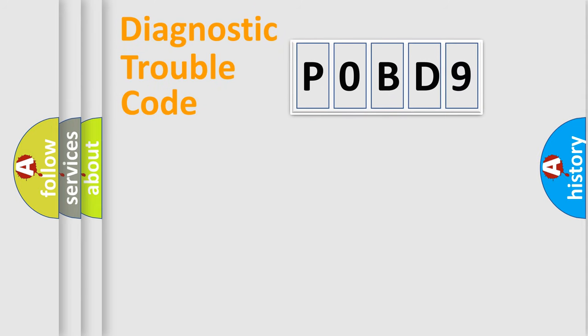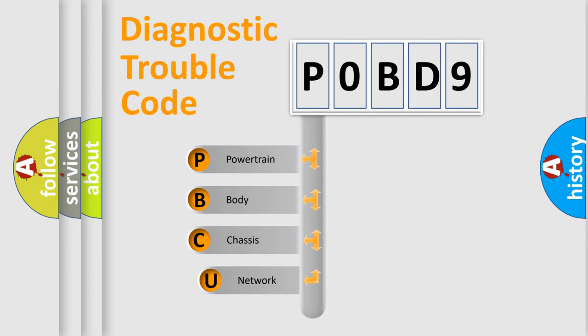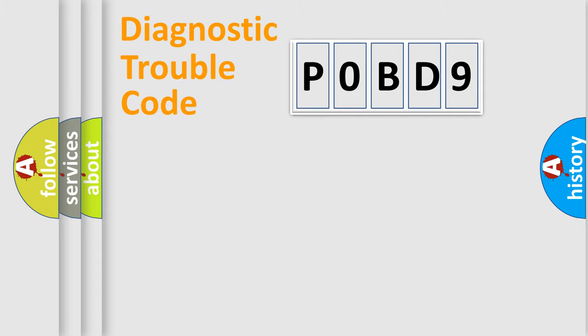Let's do this. First, let's look at the history of diagnostic fault code composition according to the OBD-2 protocol, which is unified for all automakers since 2000. We divide the electric system of automobile into the four basic units: Powertrain, body, chassis, network.